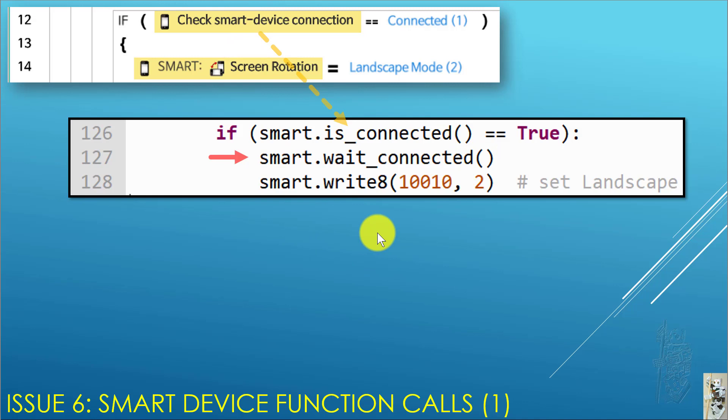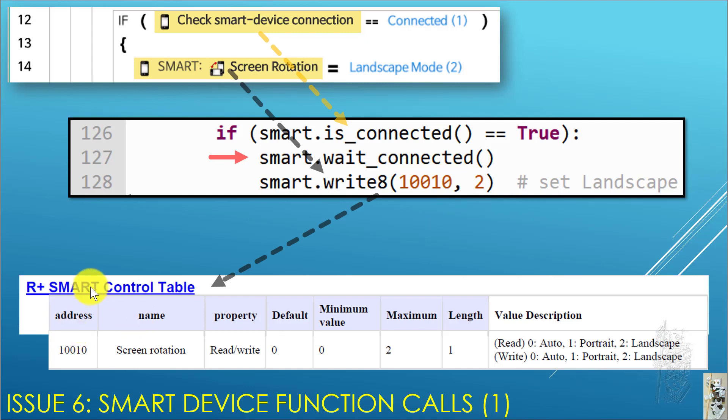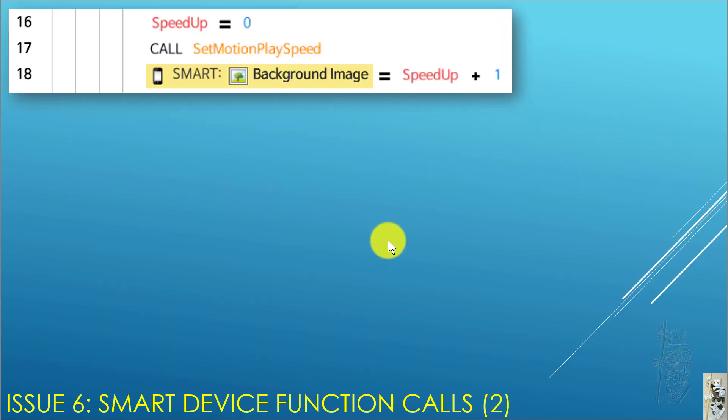And then screen rotation, smart write 10,010, 2. So, why doing that? Easy. You go to the R plus smart control table. Remember that the one that is in Korean only, that you had to translate to English. You find out that screen rotation, address 10,010 is read write. Length is 1. So, therefore, that's why it's write8. And if you write 2 to it, you get landscape. That's all.